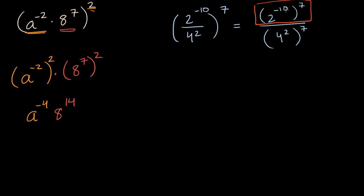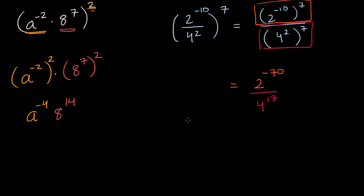The numerator would be two to the negative ten times seventh power, so this would be equal to two to the negative 70th power. And then in the denominator, four to the second power, then that raised to the seventh power — two times seven is 14 — so that's going to be four to the fourteenth power.